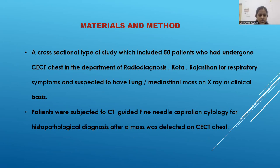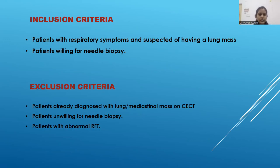Materials and Methods: This is a cross-sectional study which included 50 patients who had undergone CECT chest in the Department of Radio Diagnosis, Kota, Rajasthan, for any respiratory symptoms and suspected of having a lung or mediastinal mass on x-ray or on clinical basis. Patients were subjected to CT-guided fine needle aspiration cytology for histopathological diagnosis after a mass was detected on CECT chest. Inclusion criteria: patients with respiratory symptoms suspected of having a lung mass, and patients willing for needle biopsy. Exclusion criteria: patients already diagnosed with a lung or mediastinal mass on CECT chest, patients unwilling for needle biopsy, and patients with abnormal renal function tests.